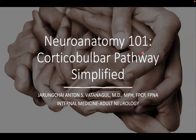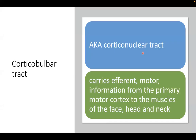Let us now begin our neuroanatomy 101 on how we can simplify the corticobulbar tract. The key word for bulbar is the brainstem, where the nuclei of the lower cranial nerves are found. The corticobulbar pathway is also known as the corticonuclear pathway — the term 'nuclear' refers to the nuclei of the cranial nerves, which are found in the brainstem.